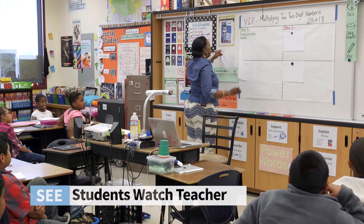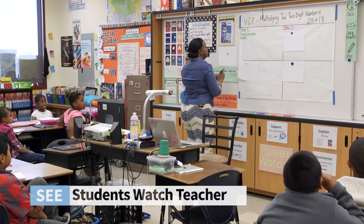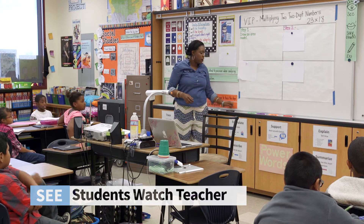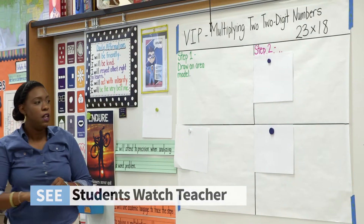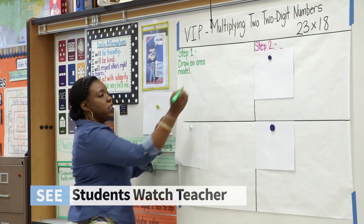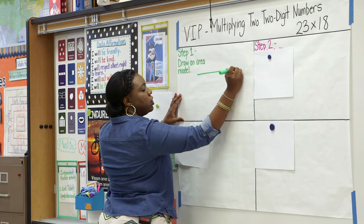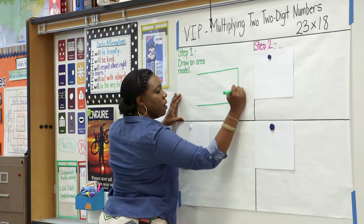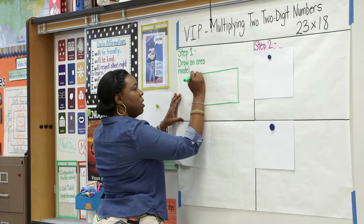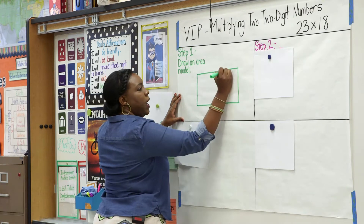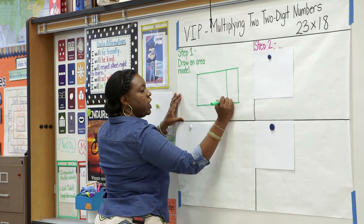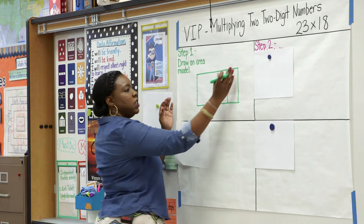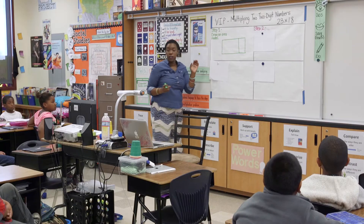Step number one is to draw an area model. I'm going to draw my area model straight across, and then make sure that one part of my box is longer than the other.